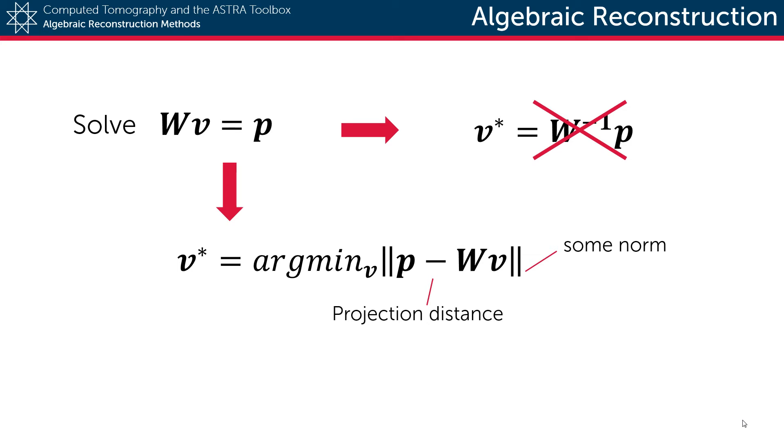To find this optimal reconstruction, we will have to use an iterative solver. There are two major families of such iterative solvers: Landweber-like methods such as ART, SART, and SIRT, and Krylov subspace methods such as CGLS.